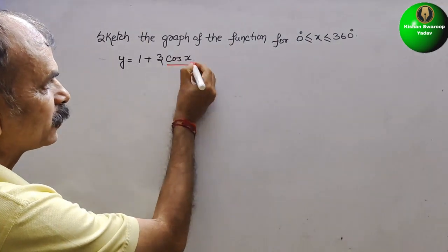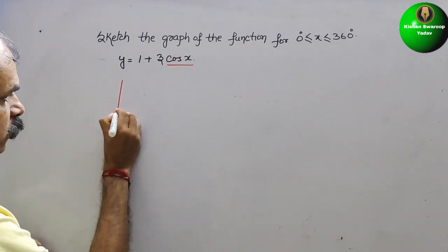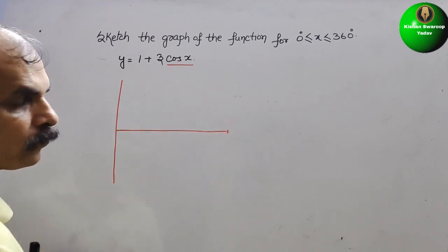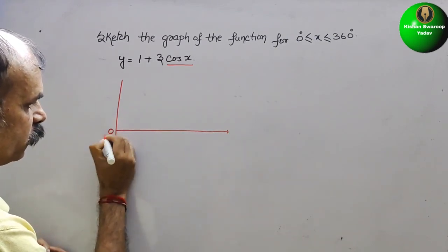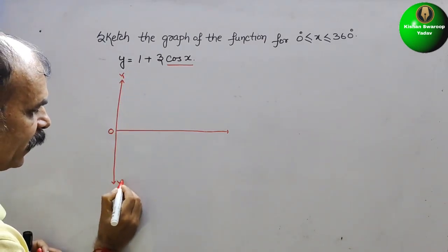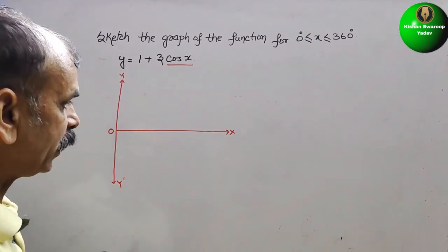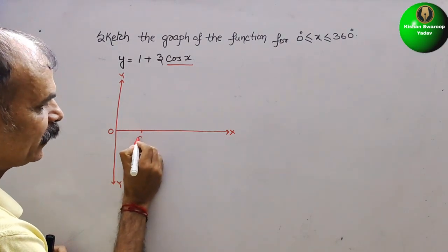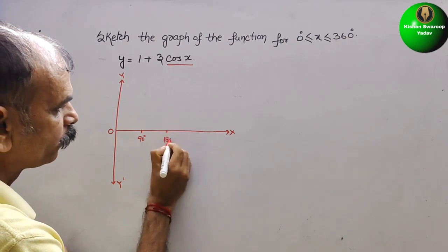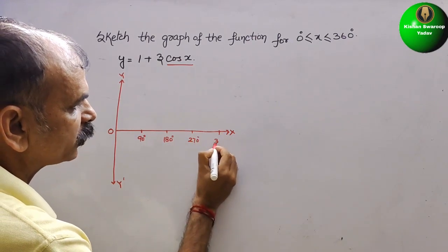For cos x, we draw the y-axis and x-axis. This is 0, this is y, this is y-dash, and here comes x. The x-axis is labeled: 90°, 180°, 270°, and 360°.